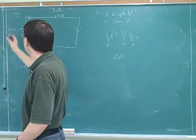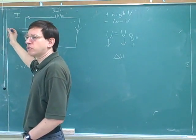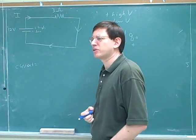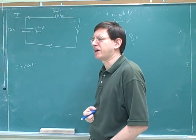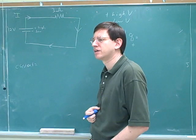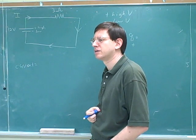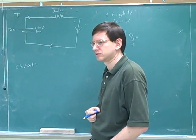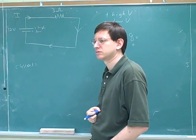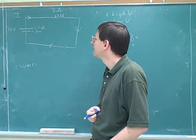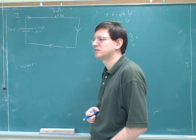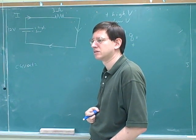So what does it mean if this is a 12-volt battery? What does that tell us about the battery? That it takes 12 joules to move a charge from low to high — to move the charge across the plate from low to high.